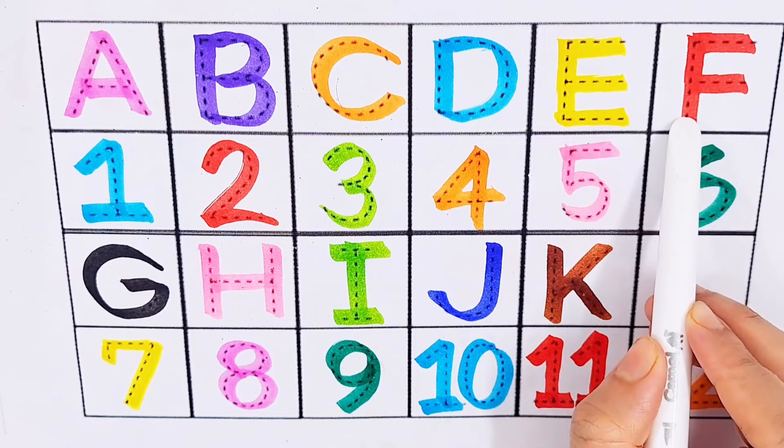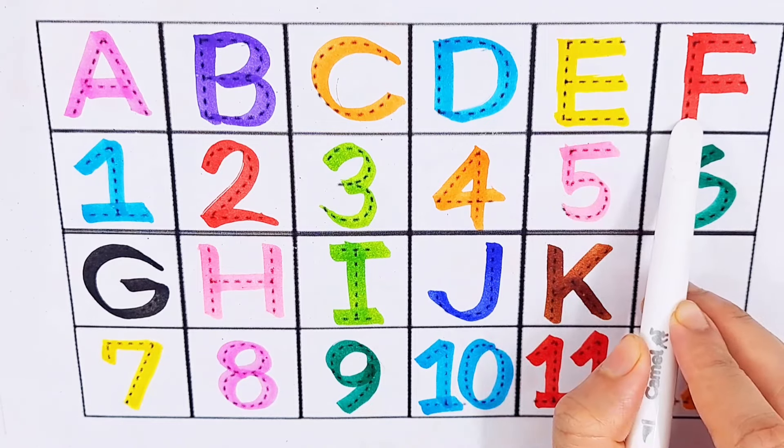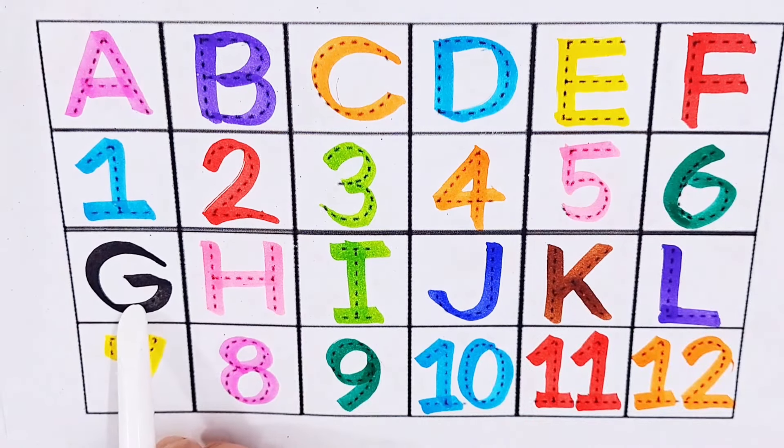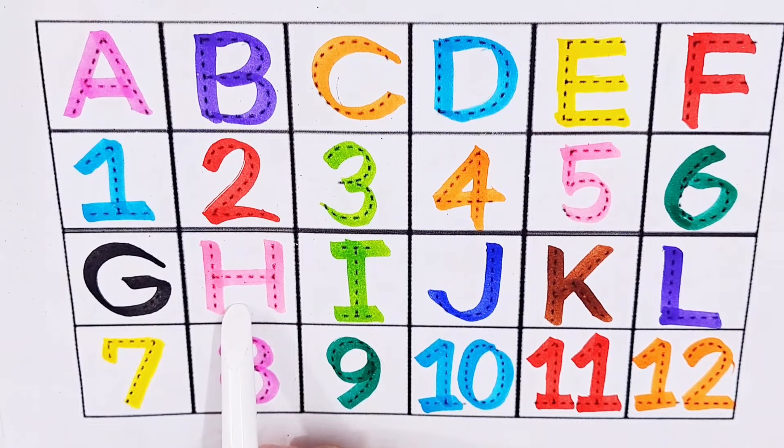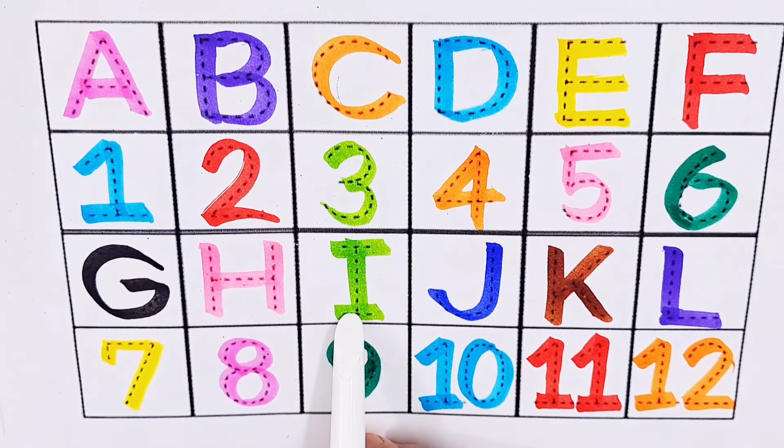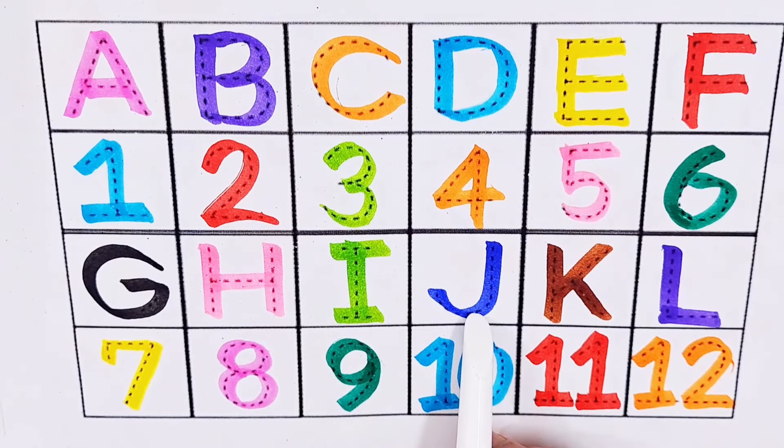F, F for flowers. G, G for goat. H, H for head. I, I for iron. J, J for jelly.